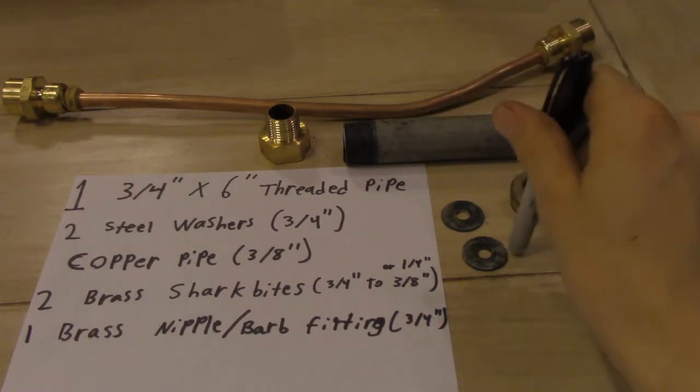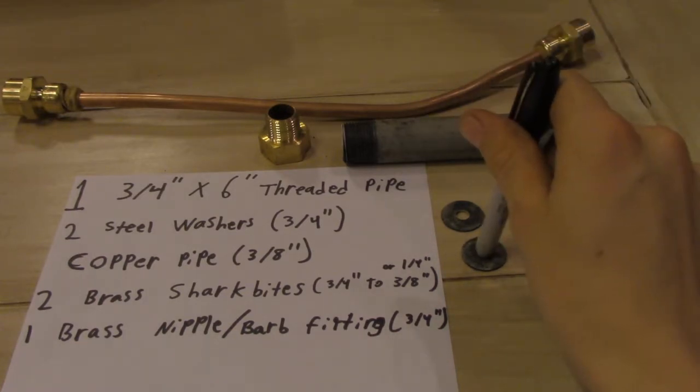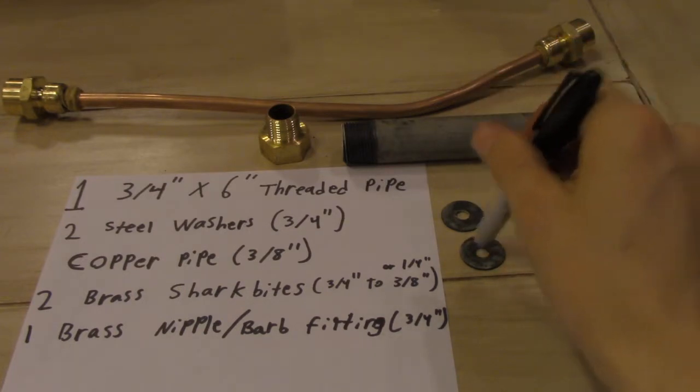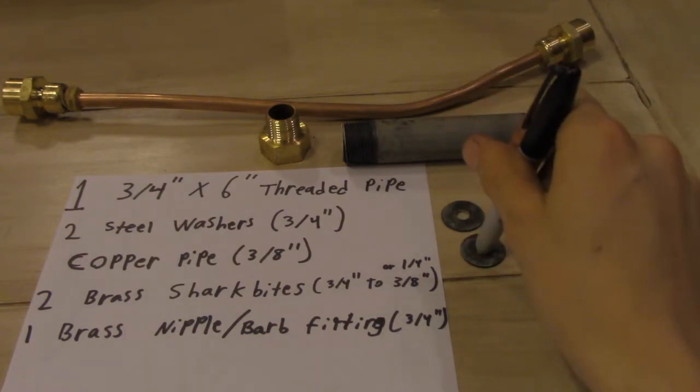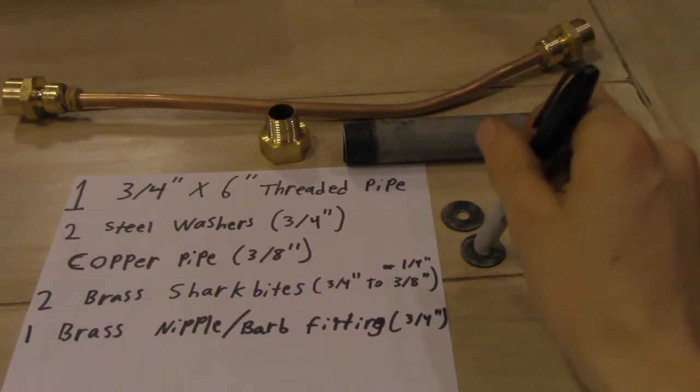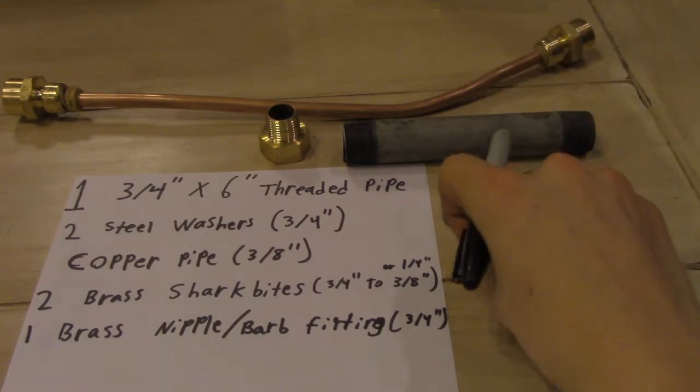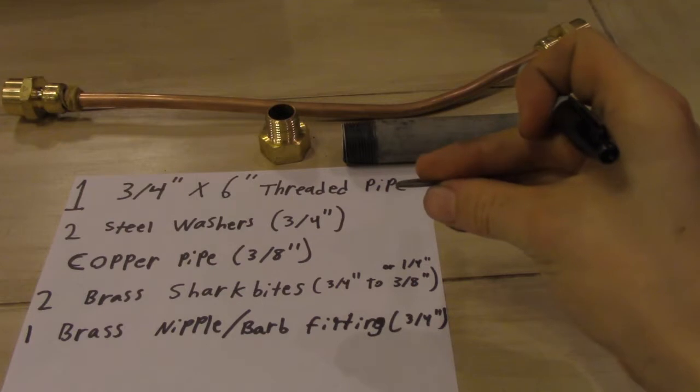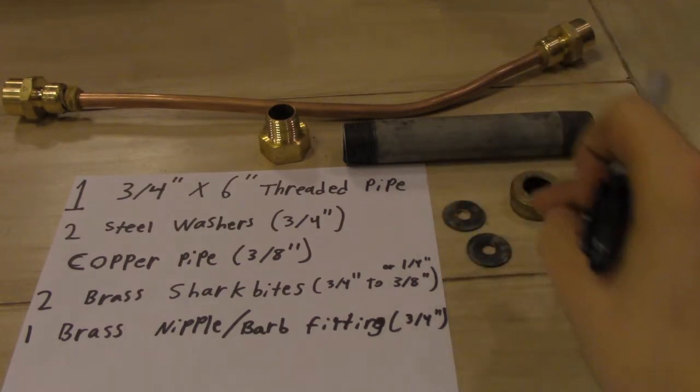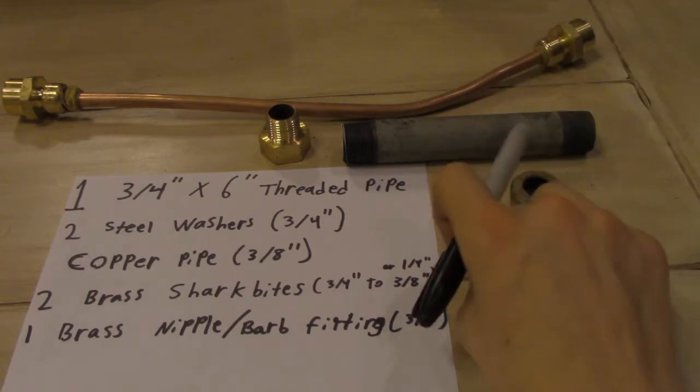So three-quarter inch washers, steel not aluminum. Then quarter inch or eighth inch, these I believe are quarter inch inner diameter. They're probably about eighth inch thick or so, two of them. No, probably about sixteenth inch thick.